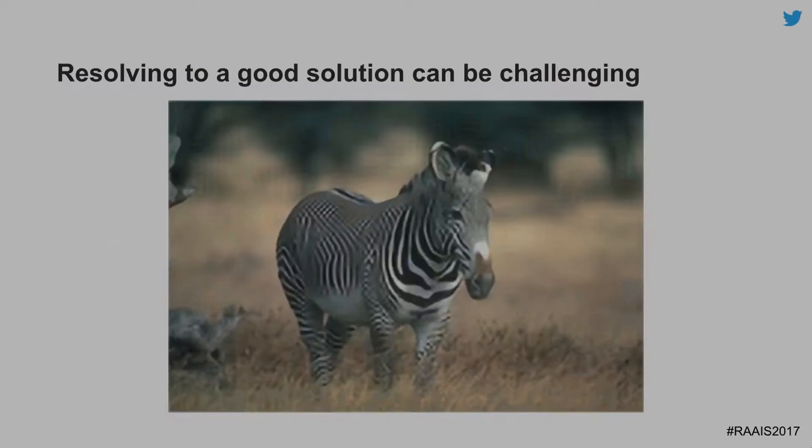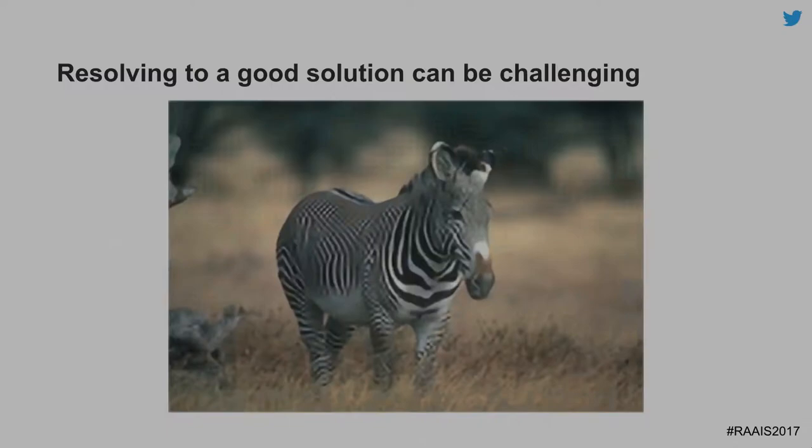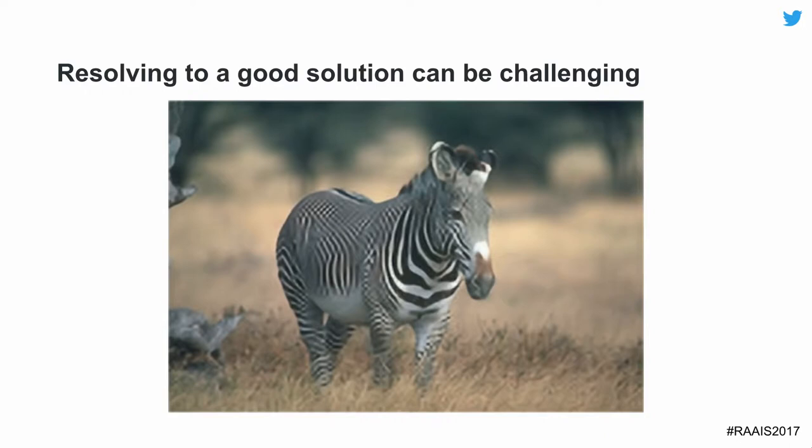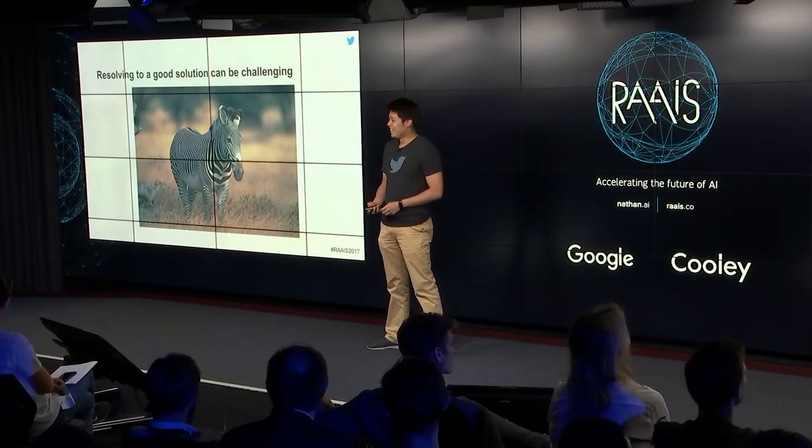Another problem we discovered is that resolving to a good solution is sometimes really problematic when you start with very little information. For example, our network couldn't decide which way the stripes went on a zebra and decided the best way to resolve it was to give crisscross stripes. We often say the zebra is the mortal nemesis of the magic pony.